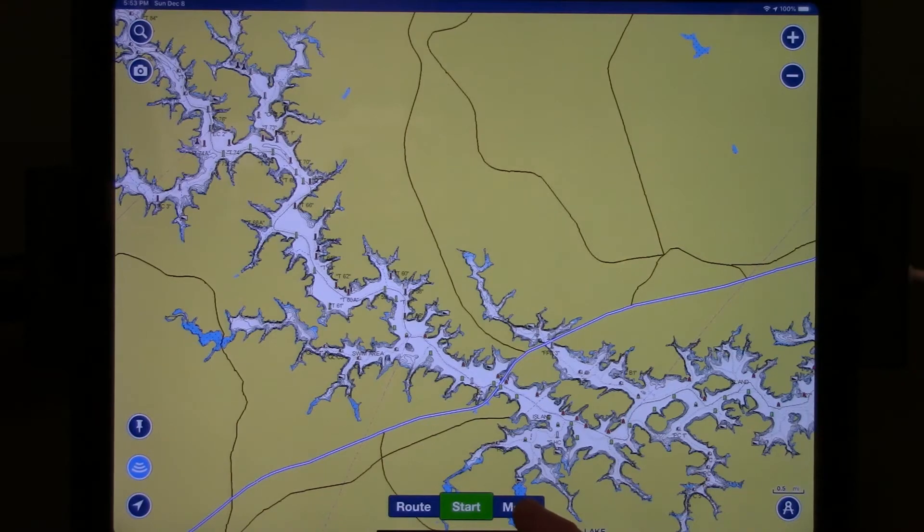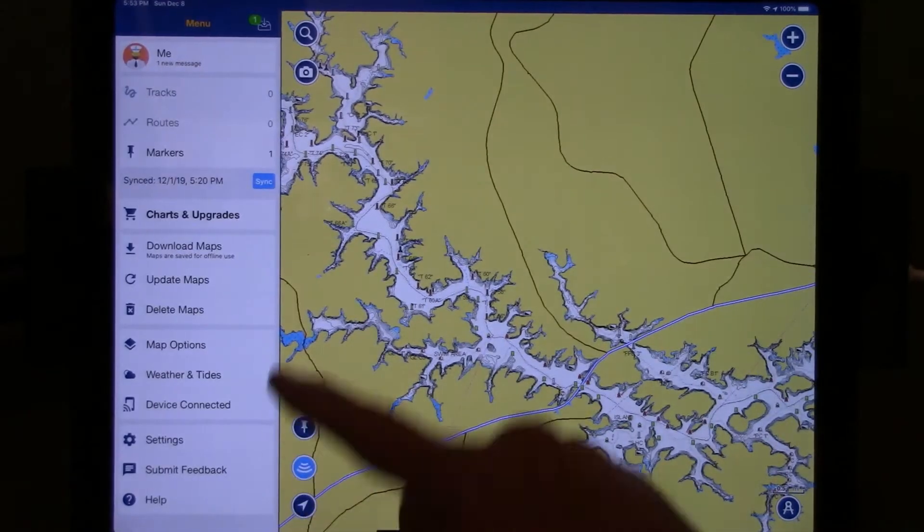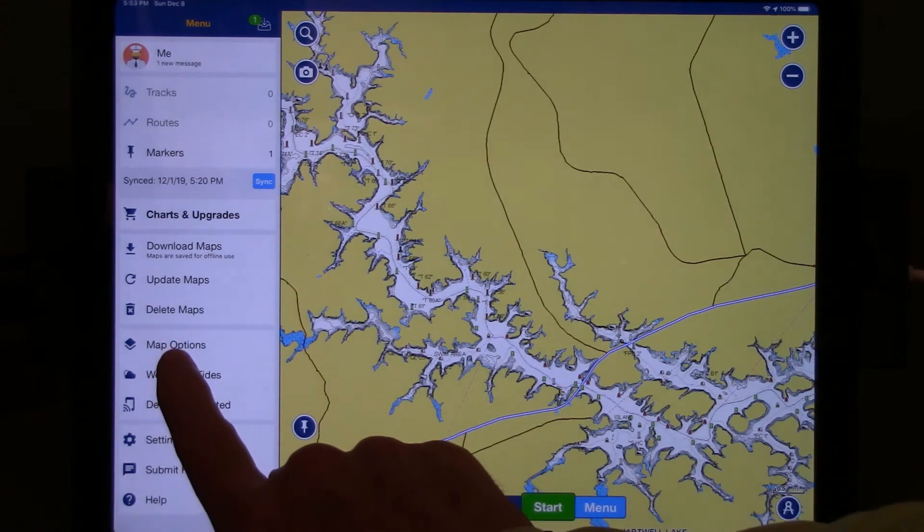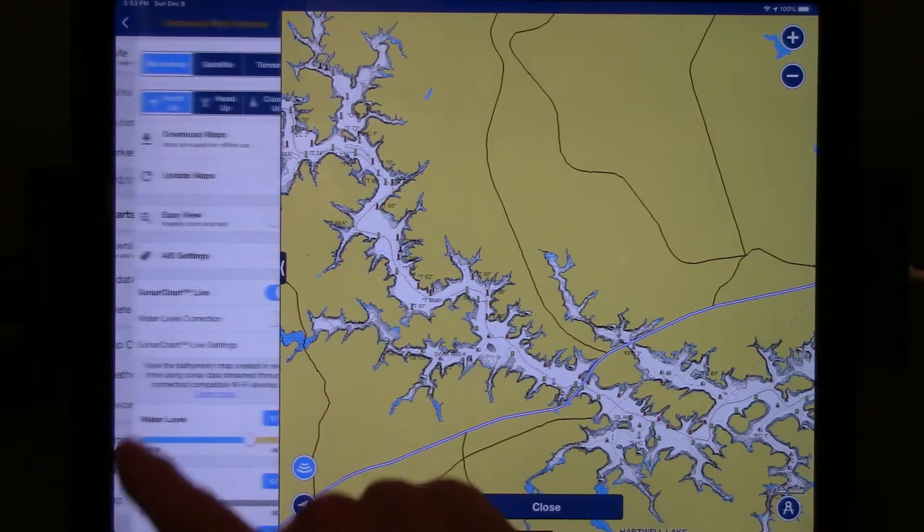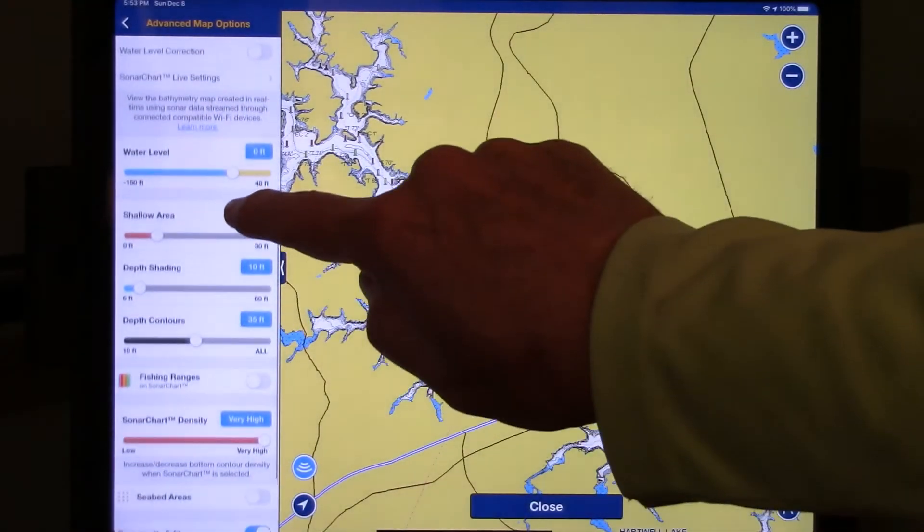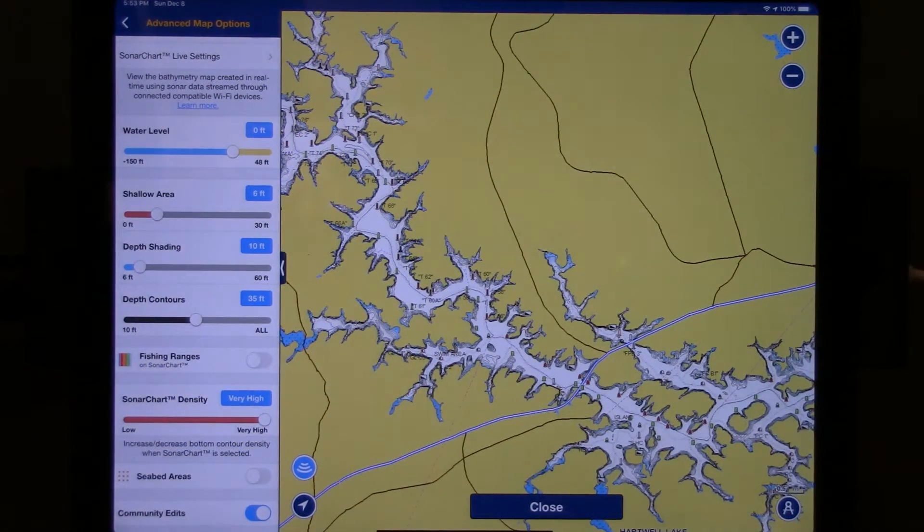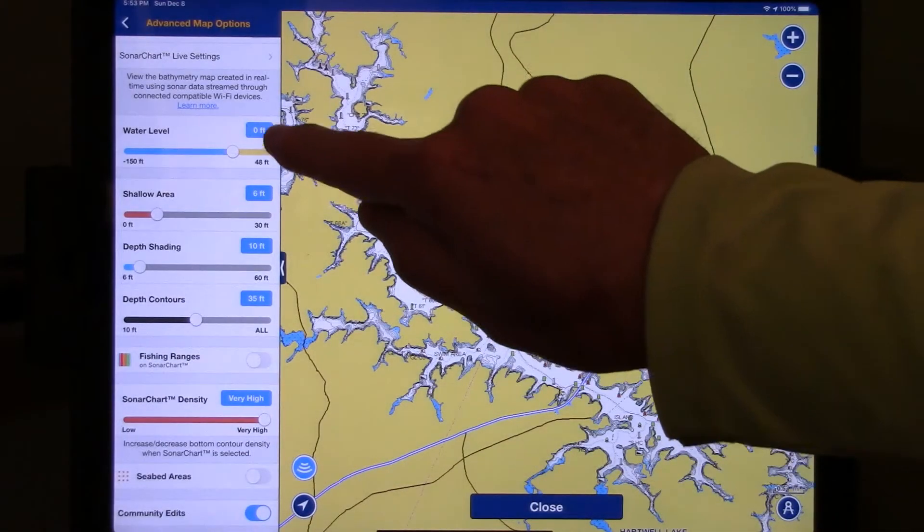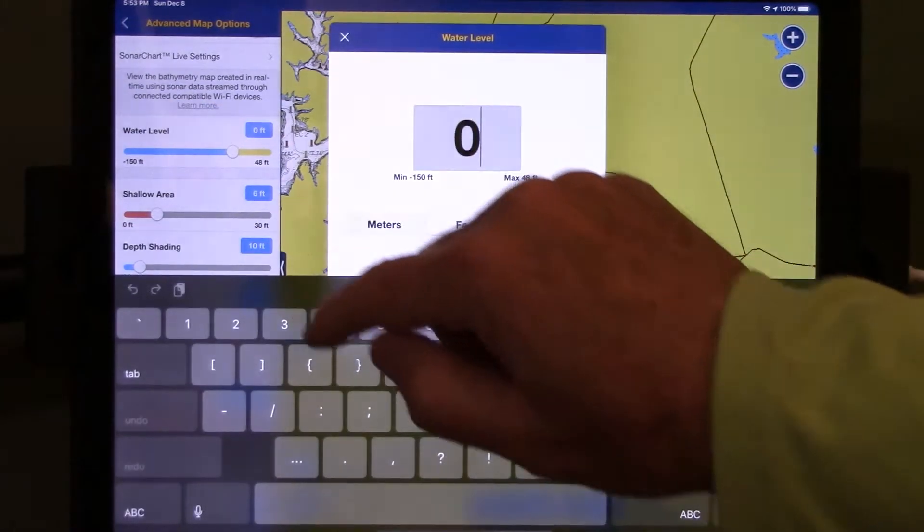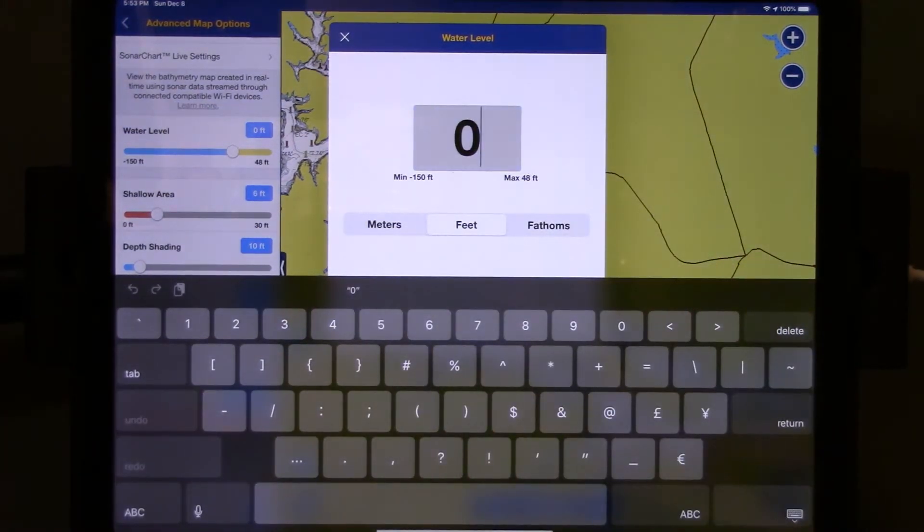On the lower right-hand side of the screen, it will bring up a number of options on the left-hand side. One of those is called Map Options. You'll select Map Options, and as you scroll down, you'll see that there are a variety of things that you can choose from on that menu. The first thing I'm going to point to here is Water Level. For those of you who fish impoundments where the water level fluctuates, this is where you would change the water level.